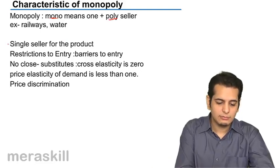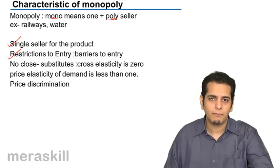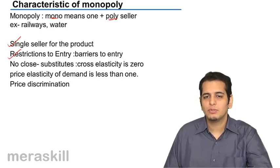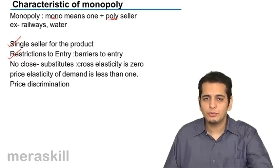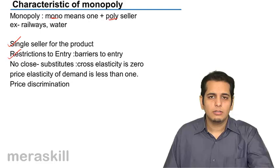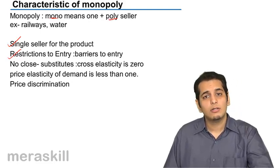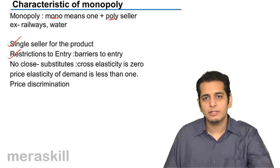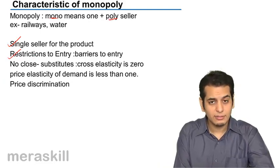Now, the characteristics are: he is a single seller, as we've discussed. There are restrictions to entry — barriers to entry. This is pretty much understandable; there are restrictions to entry, and this is probably the reason why there's only one seller. The government does not allow any private players to enter into the railways business or the defense business. So there are barriers to entry — government has put restrictions on other firms and organizations entering railways and defense. So a monopolistic market does have restrictions to entry.